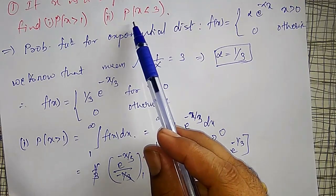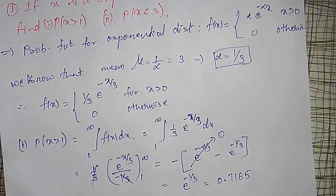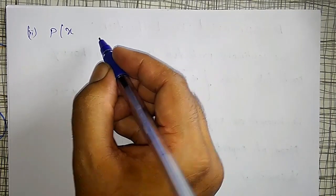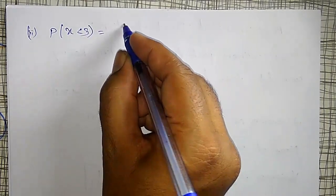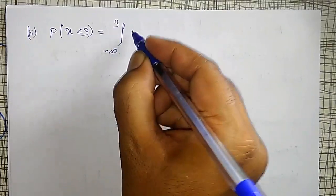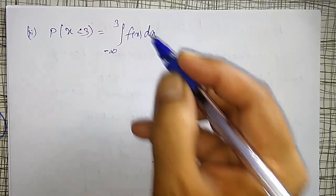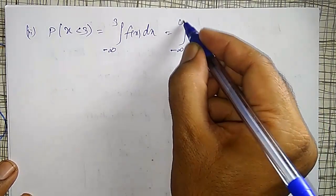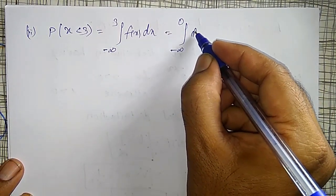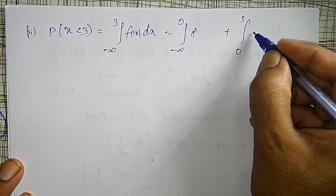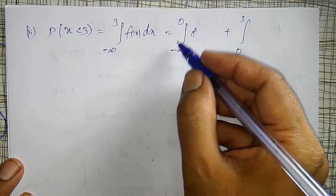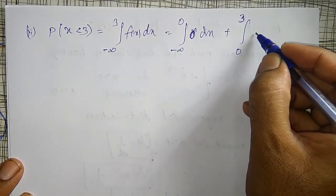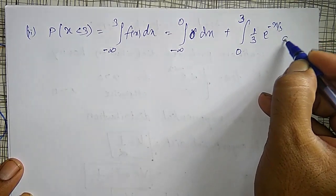I also have to find probability of x < 3. It is defined as integration from minus infinity to 3 of f(x) dx. I split this into two parts: minus infinity to 0, where f(x) = 0, and 0 to 3, where f(x) = (1/3) · e^(−x/3) dx.